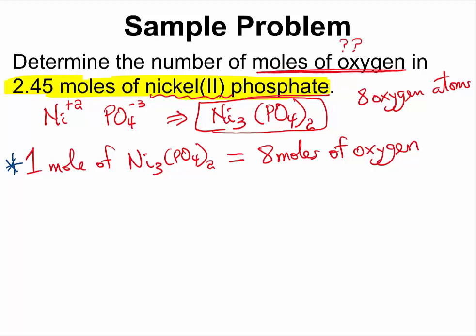So if we have 2.45 moles of Ni3(PO4)2, we then multiply by the conversion factor,